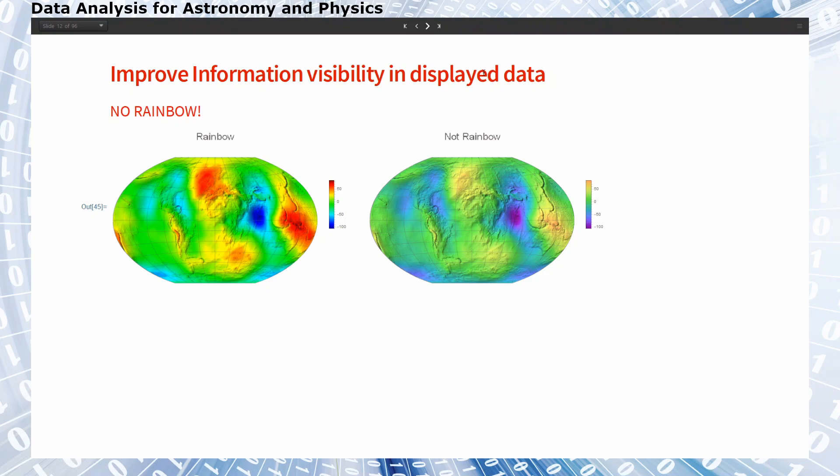And one important aspect is how to encode certain numerical quantities to visual properties. For example, on these plots here, I plot the height of the geoid. So the deviation of the earth from a perfect spherical shape, which are numbers plus and minus in units of meter.